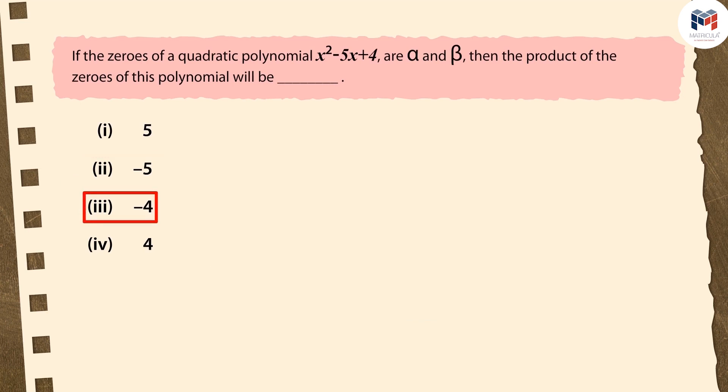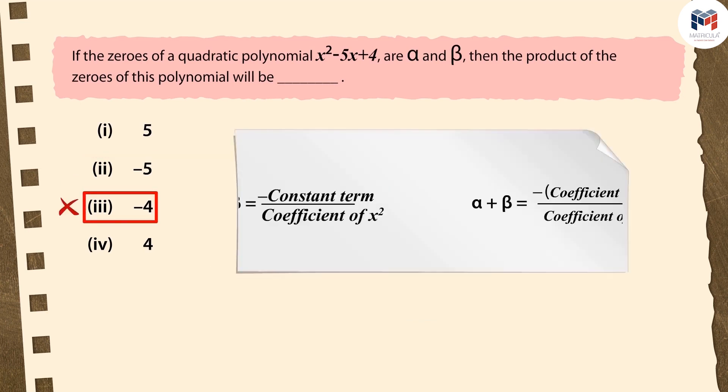If you have selected the third option, then too your selection is not correct. The reason for this is the use of a negative sign in the formula for the product of zeros.